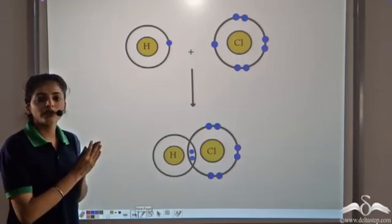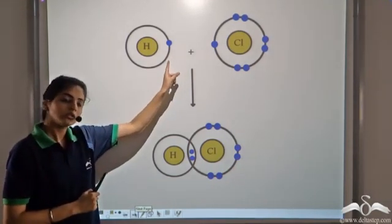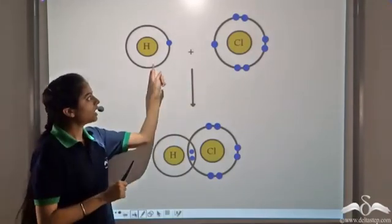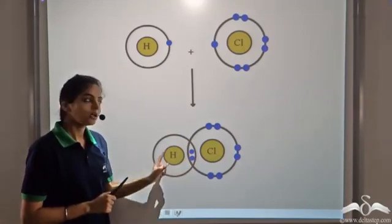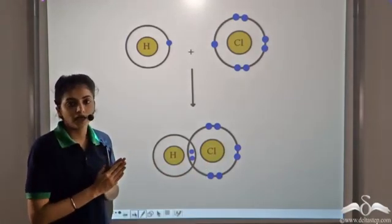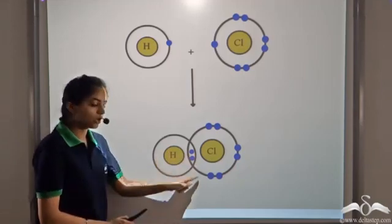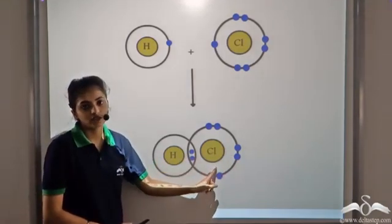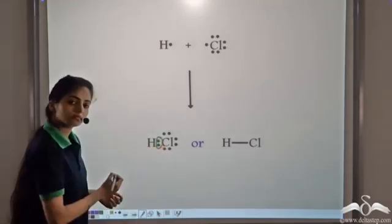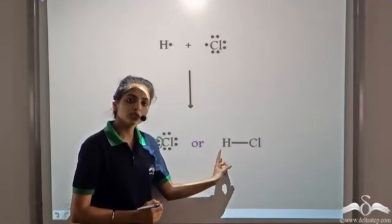Let's take an example with two different atoms. We have a hydrogen atom which has one valence electron and a chlorine atom which has seven valence electrons. Both atoms need one electron each — hydrogen needs one electron for the duplet structure and chlorine needs one for the octet structure. So both atoms share one electron each, giving hydrogen the duplet structure and chlorine the octet structure. Since they share two electrons, we represent this by a single covalent bond between hydrogen and chlorine.